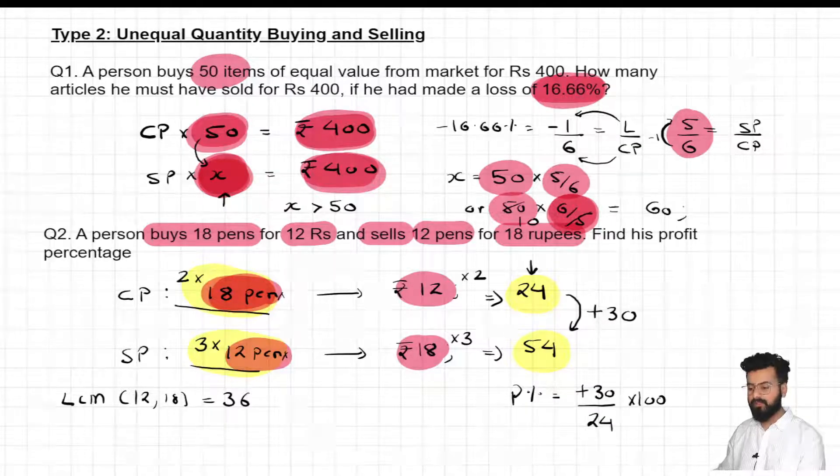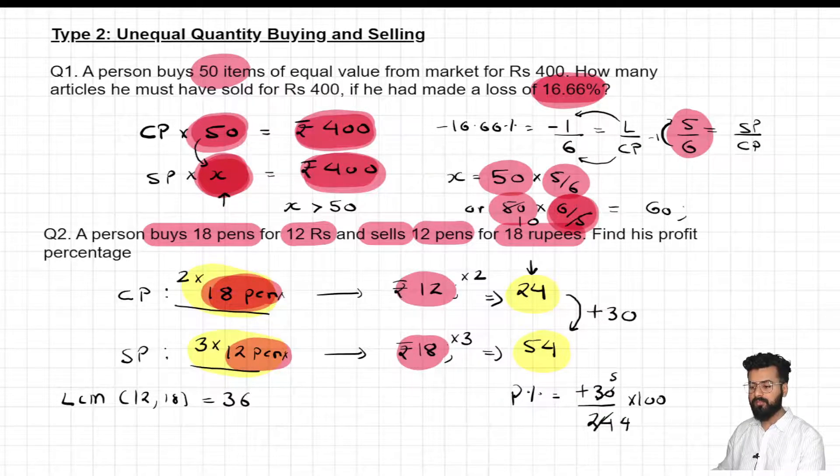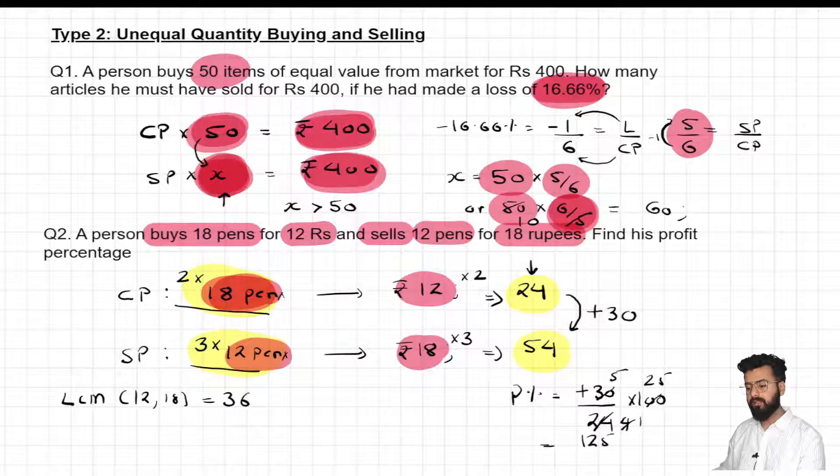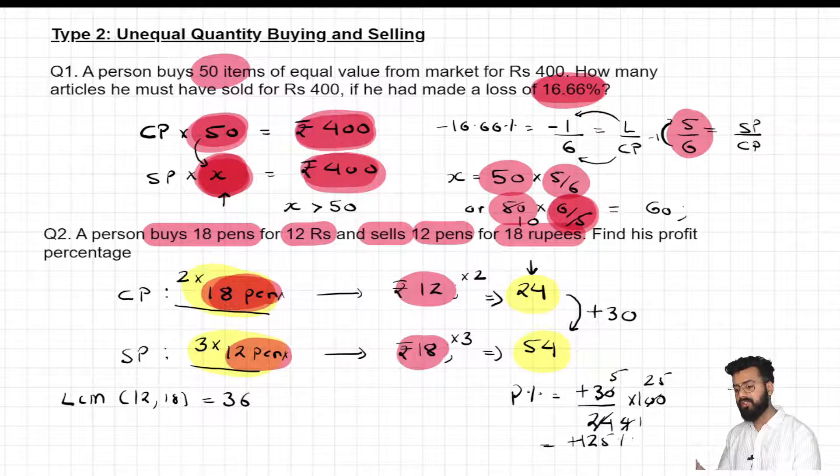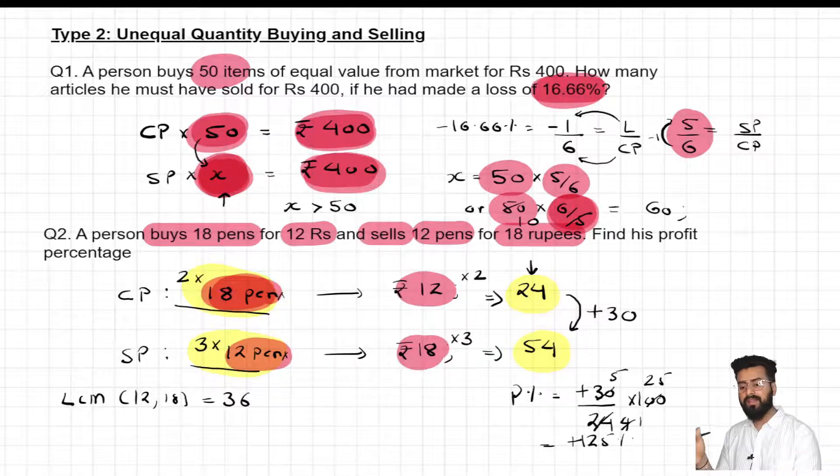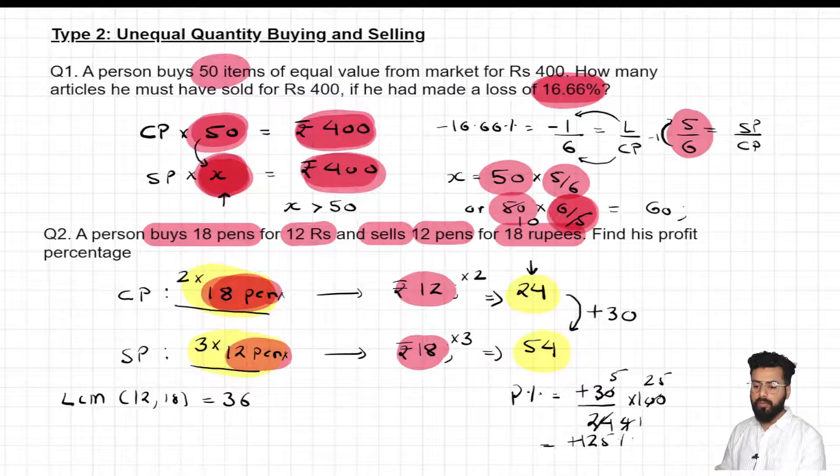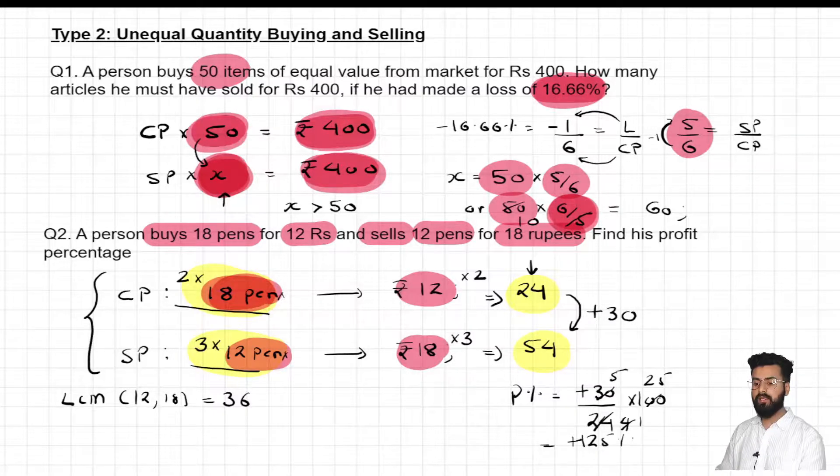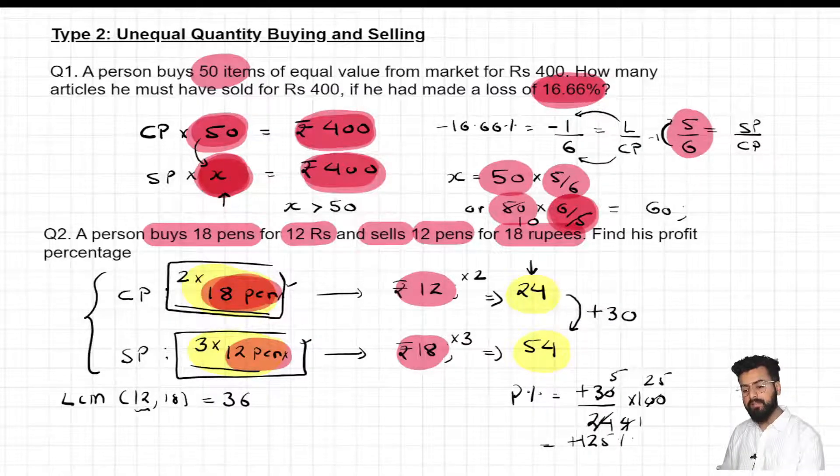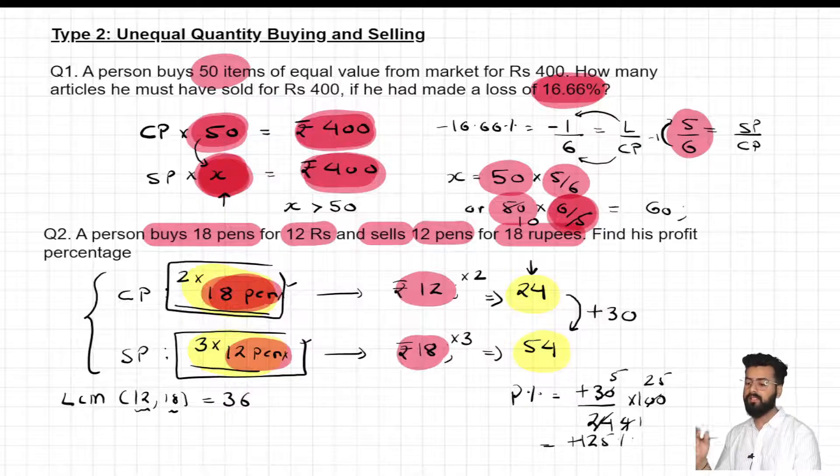Now simplify, you would say sir, this is 6, 4, 24. 6, 5, 25. 4, 1, 4, 25. What is 5 into 25? You would say 125. So how much profit this person is going to make if he makes this transaction? You would say sir, he would make a profit of 125 percent. And that is the answer of my question. So what is the learning in this question? Whenever you get a question of this type, you have to make quantity same. You have to make quantity same. And to make quantity same, you'll think about the LCM of quantity values.